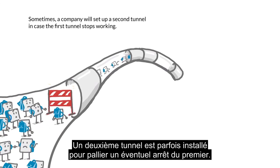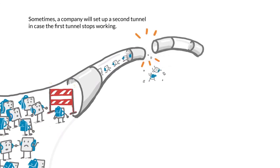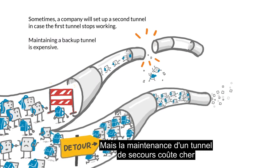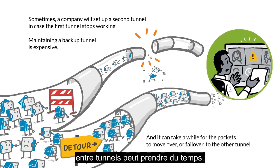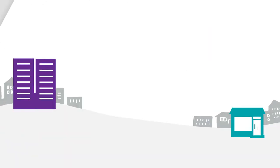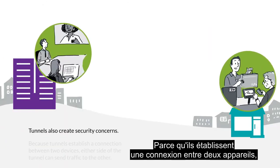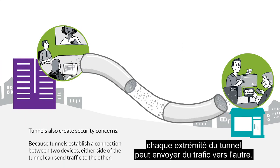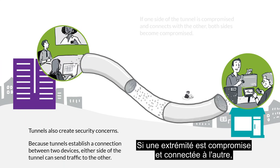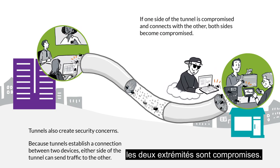Sometimes a company will set up a second tunnel in case the first tunnel stops working. Maintaining a backup tunnel is expensive, and it can take a while for the packets to fail over to the other tunnel. Tunnels also create security concerns. Because tunnels establish a connection between two devices, either side of the tunnel can send traffic to the other. If one side of the tunnel is compromised, both sides become compromised.